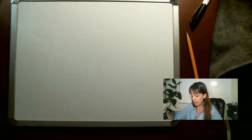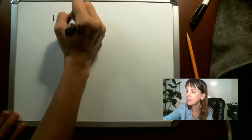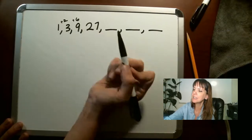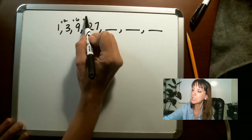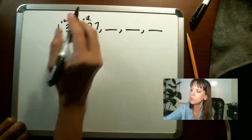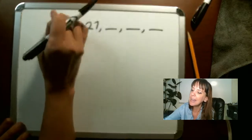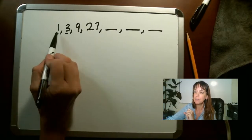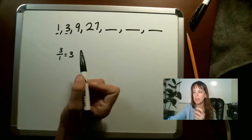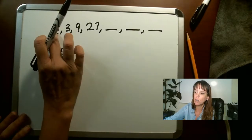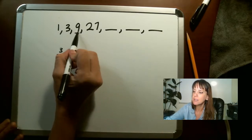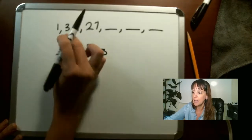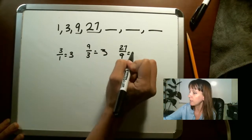Another one you'll see: one, three, nine, twenty-seven — find the next three. Looking at this, the differences are plus two, plus six, plus eighteen — that's not making a clear pattern. When that happens, there's another trick. Take this number divided by the previous one: three divided by one equals three. Nine divided by three equals three. Twenty-seven divided by nine equals three. So we're actually multiplying by three each time.